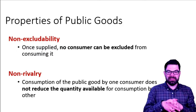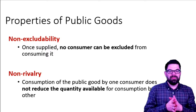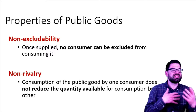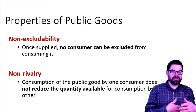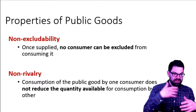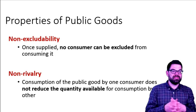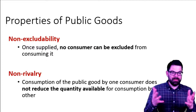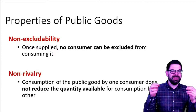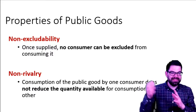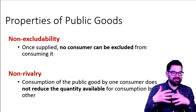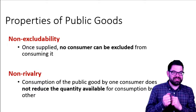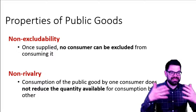Non-rivalry is the other property, which says that the consumption of a public good by one consumer does not reduce how much of that good is available to any other consumer. With the fireworks example, if I watch the fireworks and there are a couple of people standing next to me, the fact that I watch doesn't mean that other spectators can watch less of it — unless access is somehow limited.